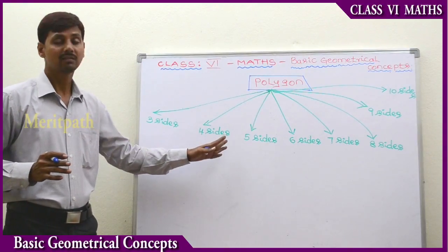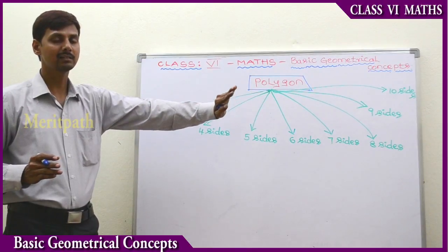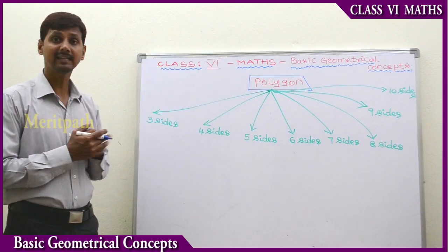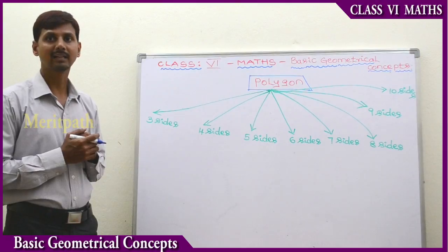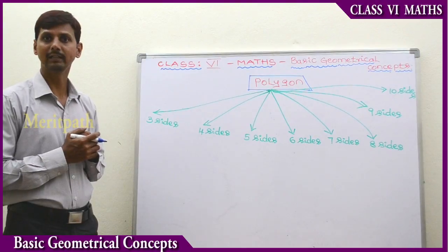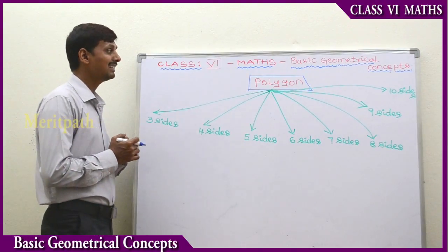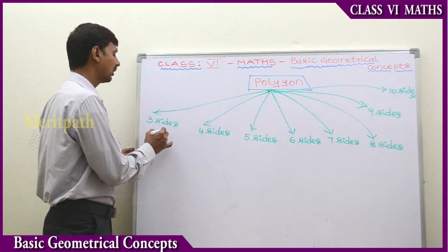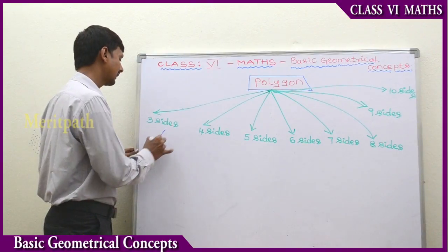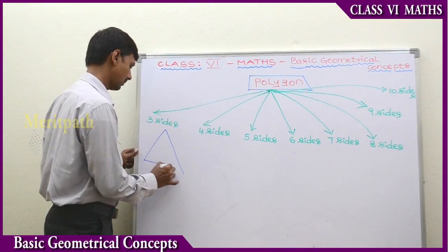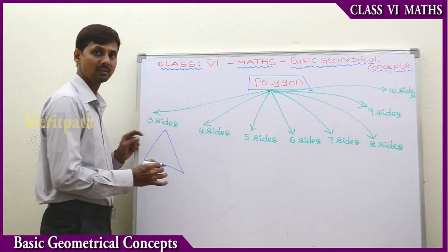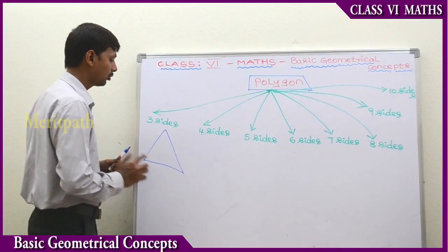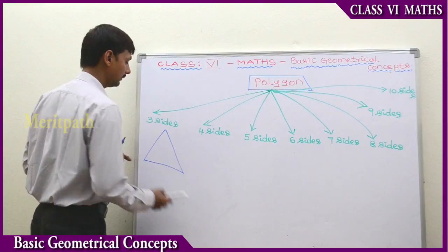four sides, five sides, six sides, seven sides, until infinite sides — that is called a polygon. A three-sided polygon we call a triangle. A simple closed figure followed by three line segments we call a triangle.